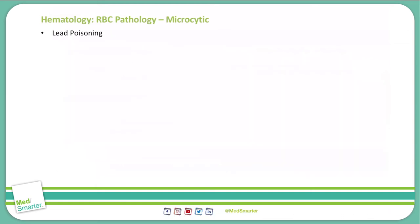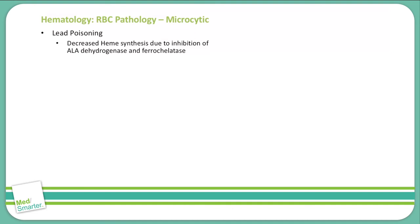Lead poisoning causes a decrease in heme synthesis due to inhibition of the ALA dehydrogenase and ferrochelatase enzymes. You also see reduced ribosomal RNA degradation with lead poisoning, and this causes basophilic stippling, which we will see a picture of in just a moment.